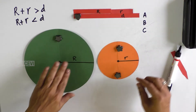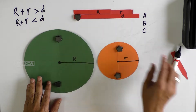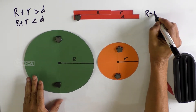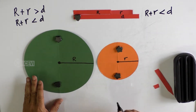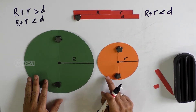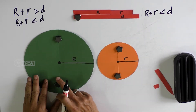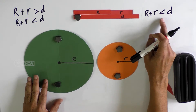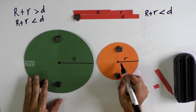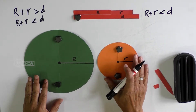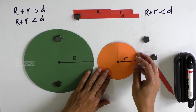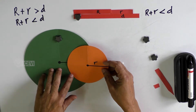You take the big R strip and put it on the distance strip, then place the small r strip beside it. You can notice that the formula says capital R plus small r is less than D. That is, when the radius of the first circle and the radius of the second circle are put together, if their total is less than the distance between the centers, then the circles are non-intersecting.